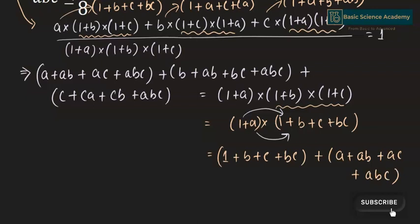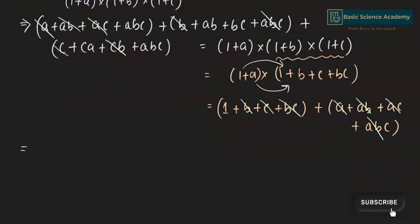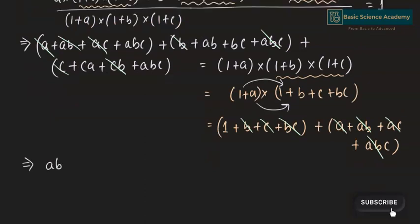There are many common terms in this equation. Cancelling common terms, the remaining terms are a + b + c + ab + bc + ca + 2abc, since abc + abc = 2abc. This equals 1 on the right side.